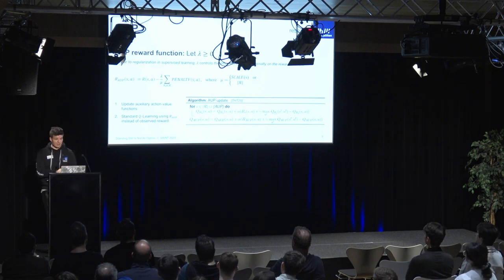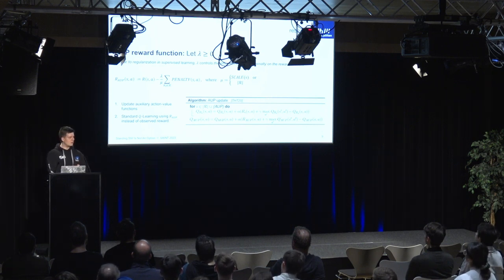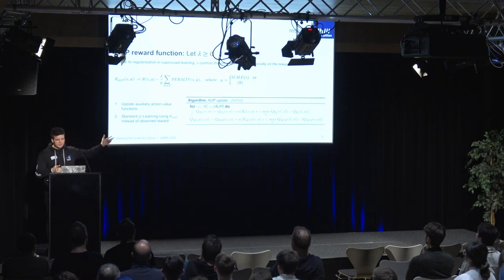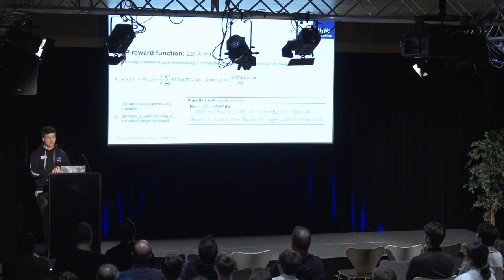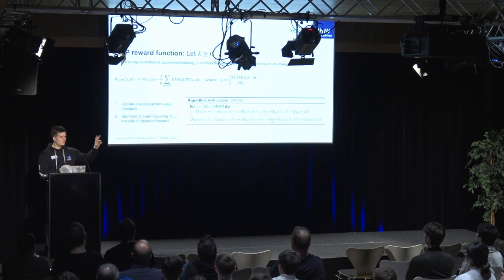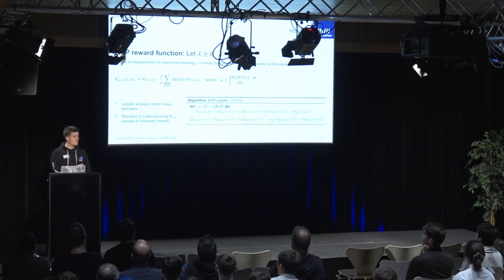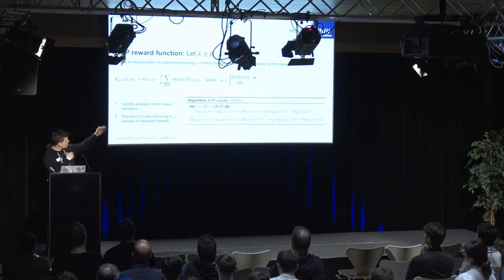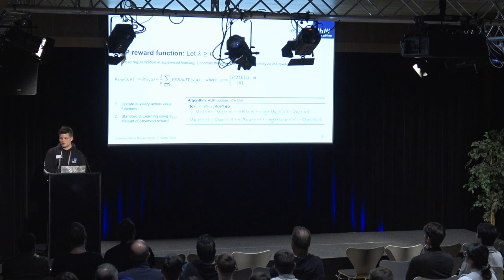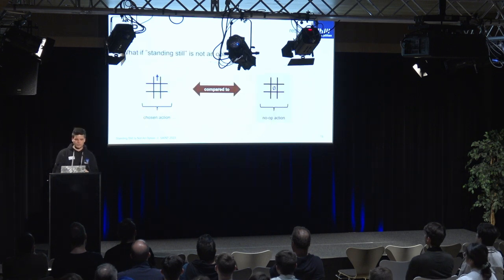For the full AUP objective, we subtract this penalty from the primary reward function and use a parameter lambda to control its influence. Loosely speaking, this combination can be seen as regularizing the reward function. In the full update step, we update each auxiliary action-value function and can use standard Q-learning to train the agent.